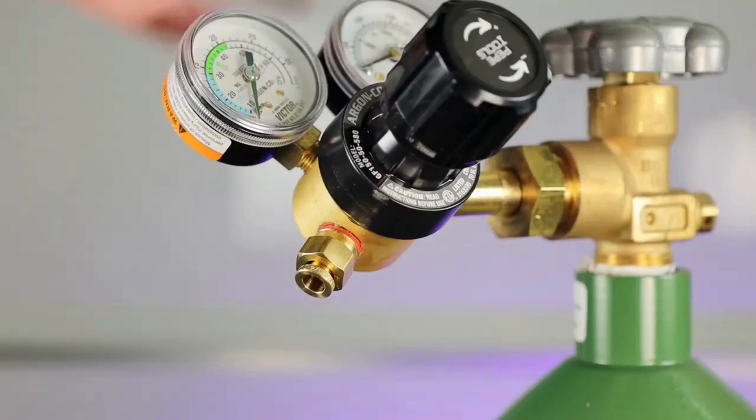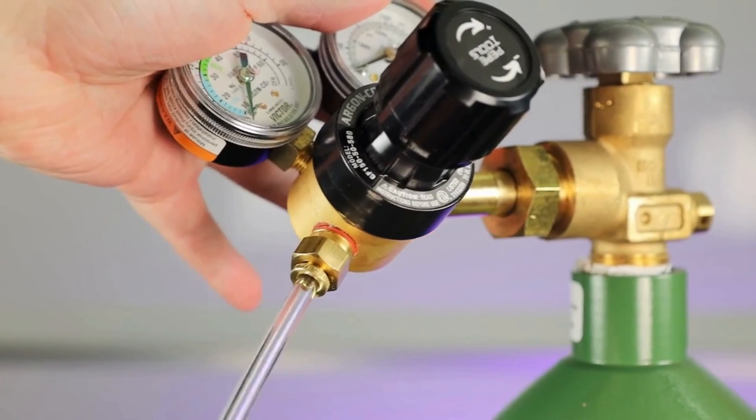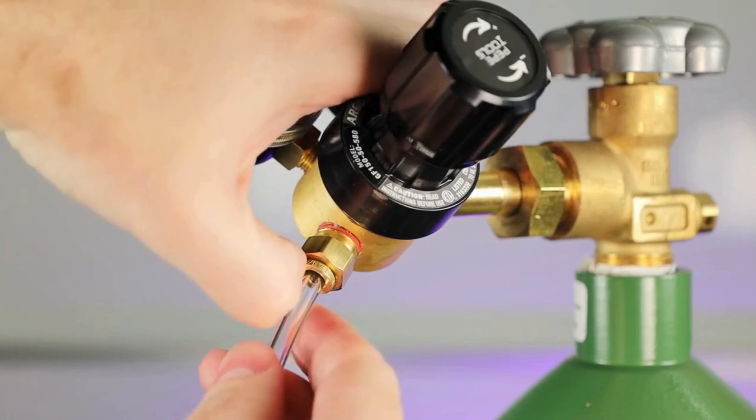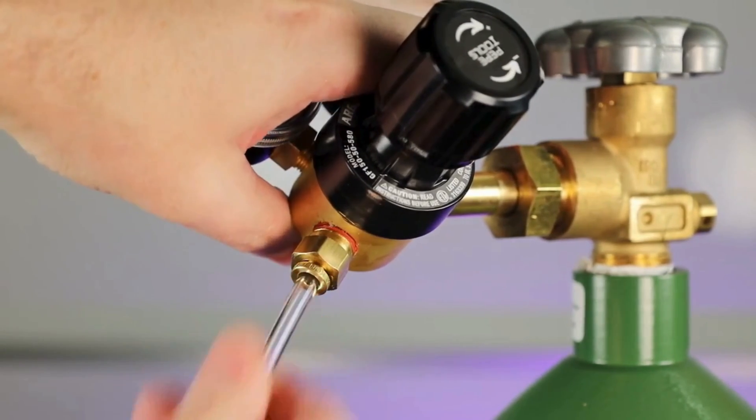Once you have everything hand-tight, you can tighten this up with a wrench, and you plug in the other end of that hose right here. Just like before, push it in until it stops, and then pull on it a little bit to make sure it doesn't slide out. But if you do need to take it out for some reason, all you have to do is push on this piece and pull the tube out.